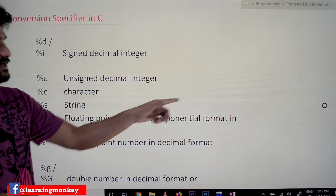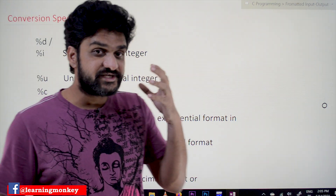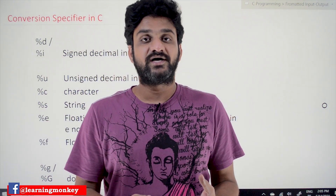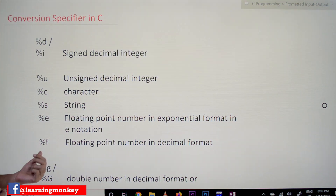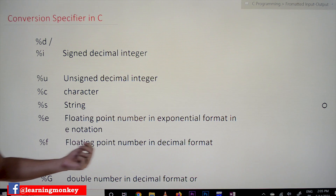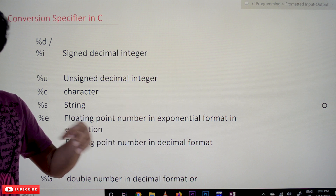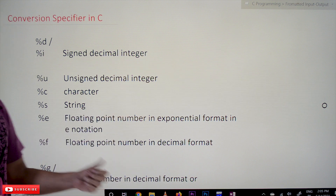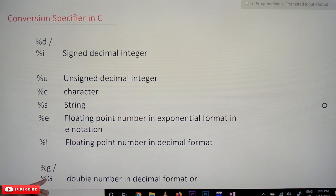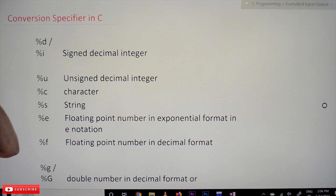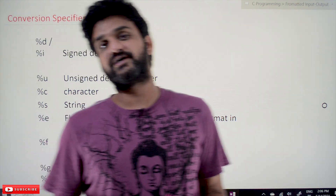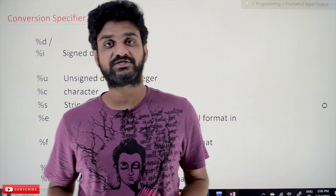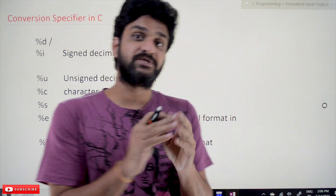%e is for a floating point number in exponential format — in powers of E. So if you want the value of a floating point number to be displayed in powers of E, then we use %e. Similarly, %f — which we already know — is for a floating point number in decimal format, like 36.45. If you want to display a floating point number in that format, use %f. %g and %G — lowercase g and uppercase G — are used for double floating point numbers in decimal format. These are the different conversion specifiers.